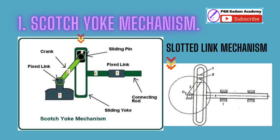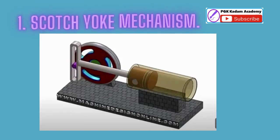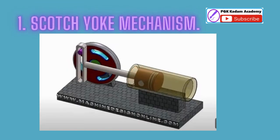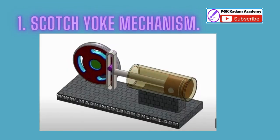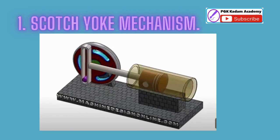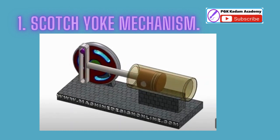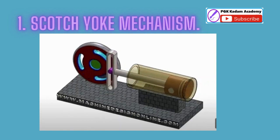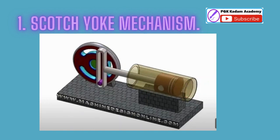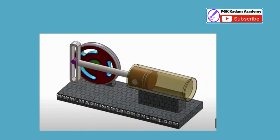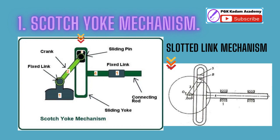The setup of this mechanism is quite simple — it has one input part, i.e., the crank, and the slider moves accordingly. The slider has a component called Scotch which resembles the shape of a yoke. The Scotch yoke is used in many applications where the flow of fluid is to be controlled in sections per unit of time. This mechanism has a simple construction as depicted in the figure.